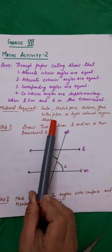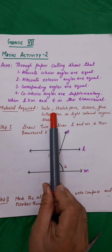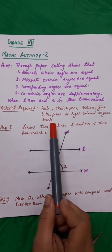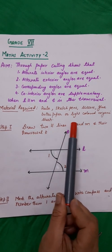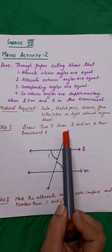Materials required are: scale, sketch pens, scissors, glue stick, and butter paper or light colored origami sheets.